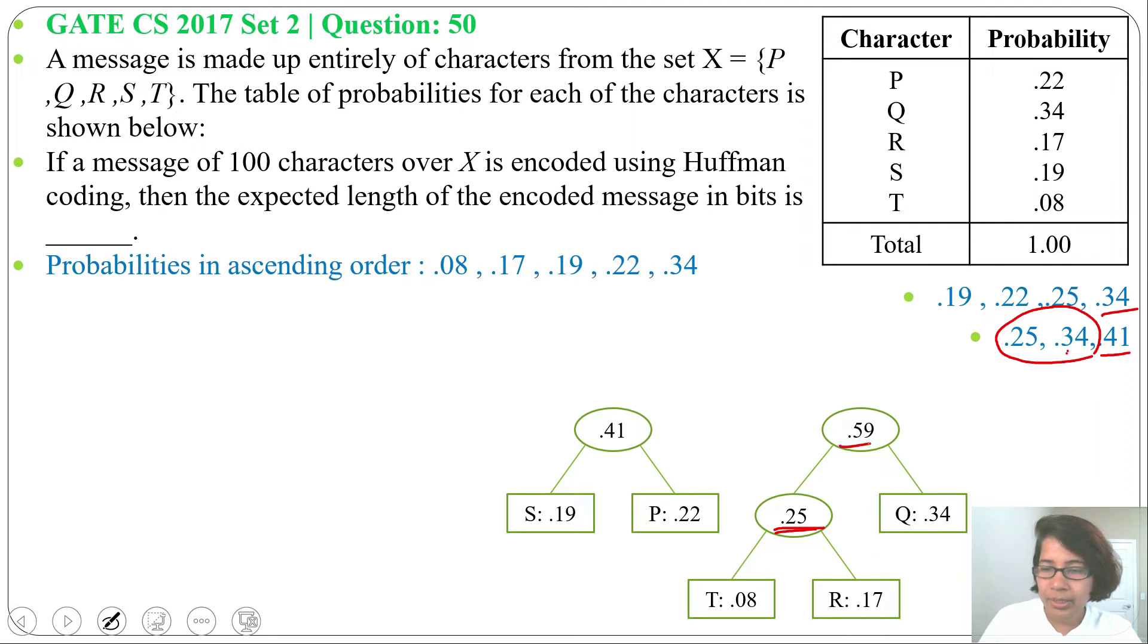Next, I will insert this 0.59 in the queue. Already 0.41 is there, so on the right side of 0.41, next to 0.41, I will insert 0.59 as it is greater than 0.41.